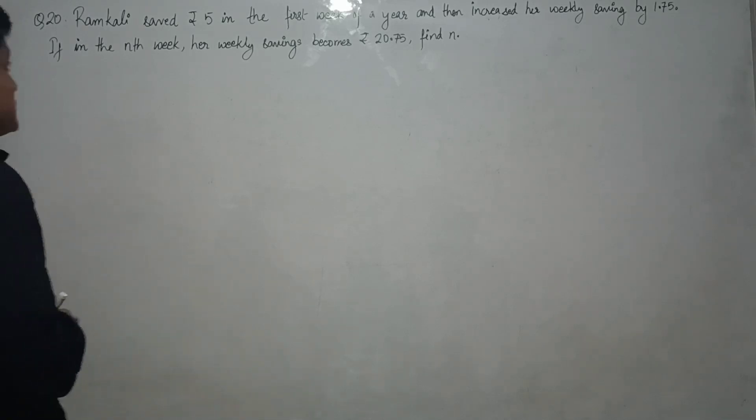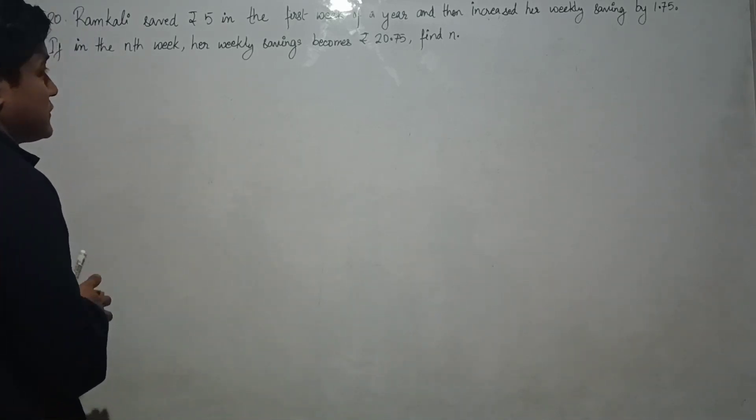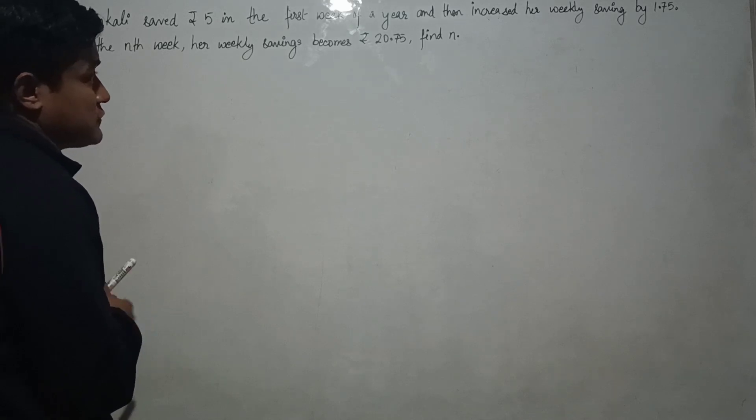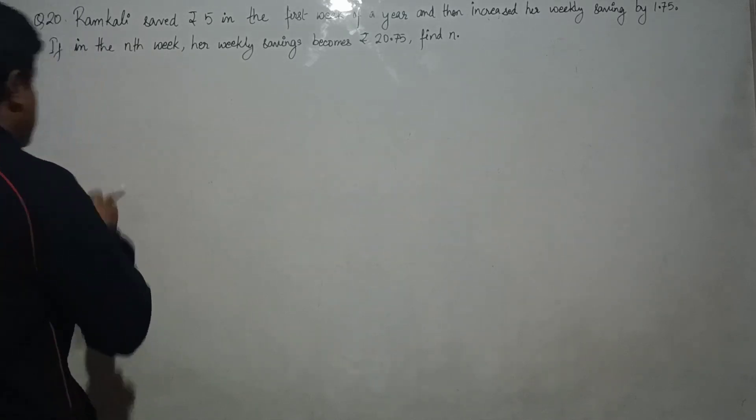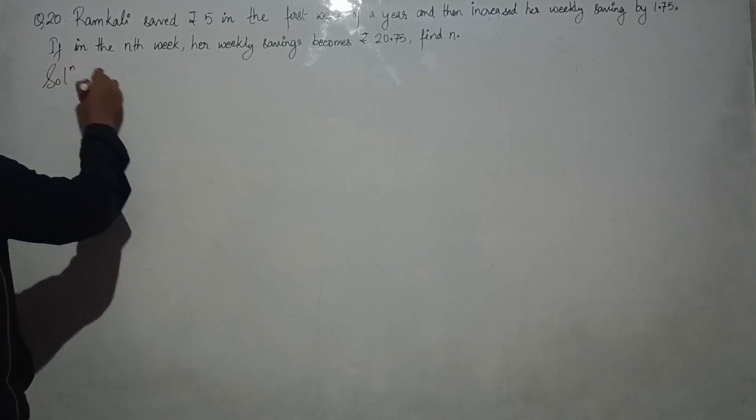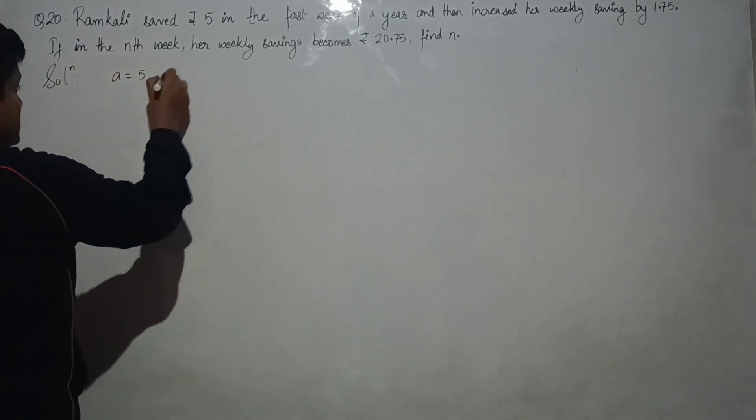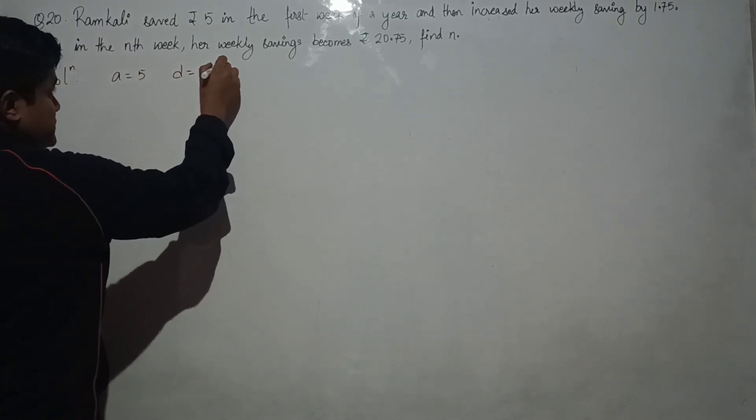Question number 20: Ramakali saved rupees 5 in the first week of a year and then increased her weekly saving by 1.75. So this is an AP. First term is 5, common difference is 1.75.